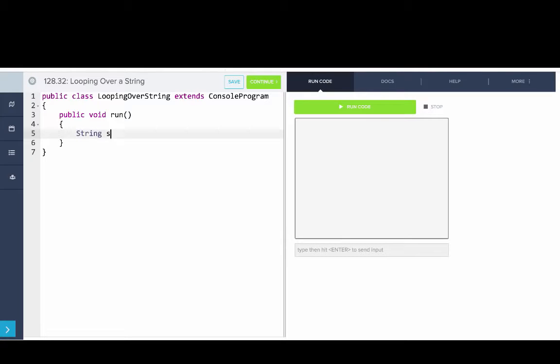Okay. So I'll say string str equals hello world. Okay. And so what I want to do is I want to loop over this string and print out all the characters.